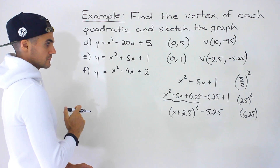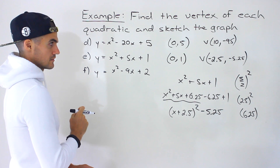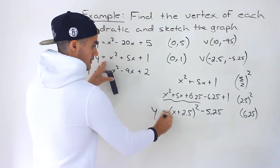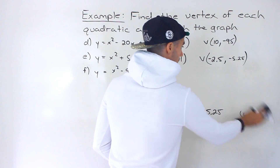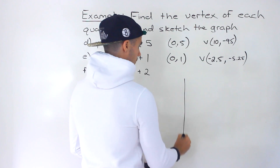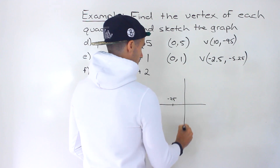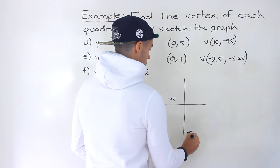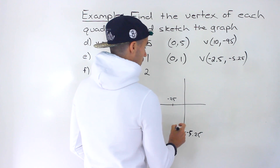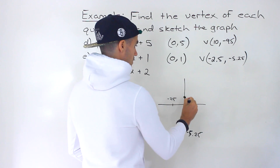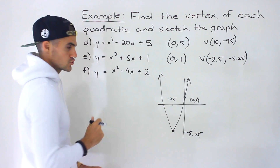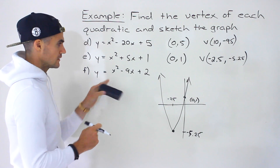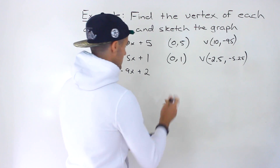Vertex form is (x + 2.5)² − 5.25. The vertex is (−2.5, −5.25) — opposite sign for the x-coordinate. Sketching: vertex at (−2.5, −5.25) and y-intercept at (0, 1) up here, giving a quadratic that looks like that.